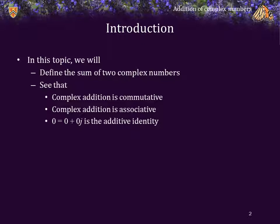So in this topic, we will define the sum of two complex numbers, and we will see that complex addition is commutative and associative, and we will see that zero is indeed the additive identity.